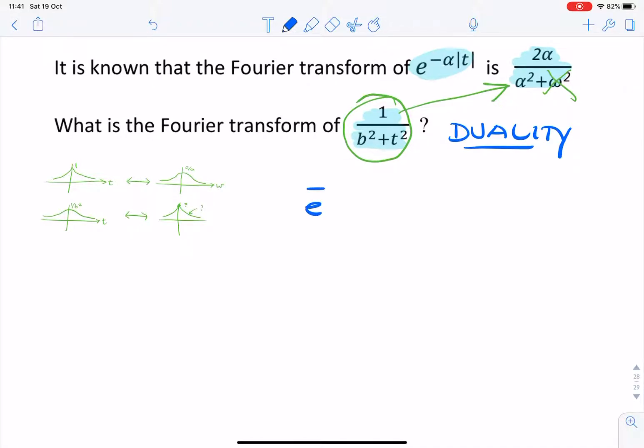We know that 2α over α² plus, now instead of writing ω², I'm going to write t², because the function they're asking about is a function of t. So I'm going to say plus t². That corresponds to the same function there, the double-sided exponential. So it's e to the minus α, and I'm going to put an ω here.